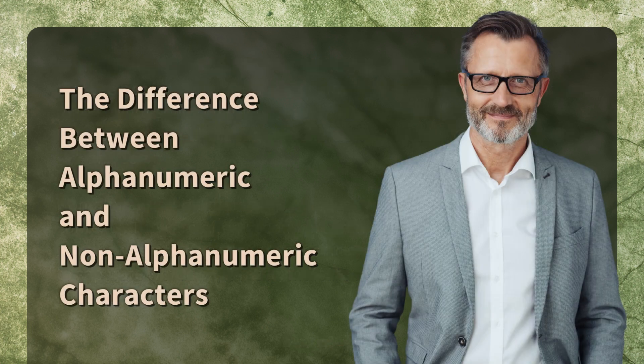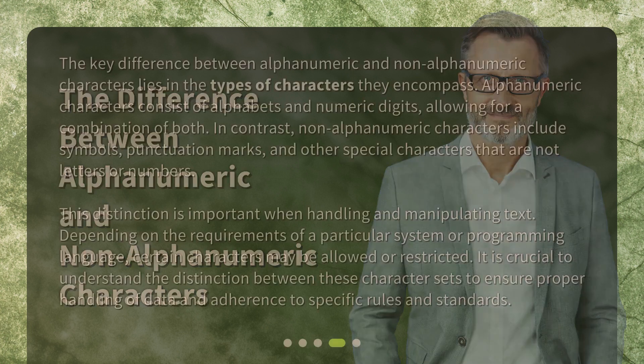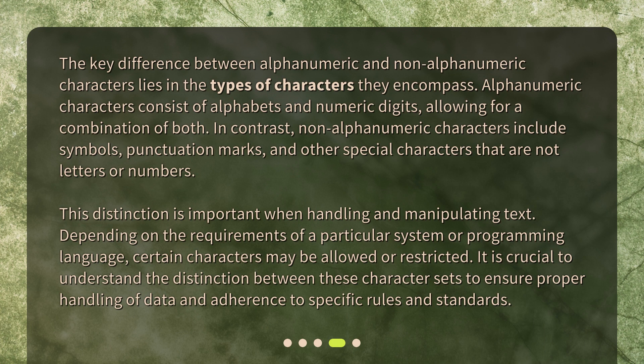The key difference between alphanumeric and non-alphanumeric characters lies in the types of characters they encompass. Alphanumeric characters consist of alphabets and numeric digits, allowing for a combination of both. In contrast, non-alphanumeric characters include symbols, punctuation marks, and other special characters that are not letters or numbers. This distinction is important when handling and manipulating text, as certain characters may be allowed or restricted depending on the requirements of a particular system or programming language. It is crucial to understand this distinction to ensure proper handling of data and adherence to specific rules and standards.